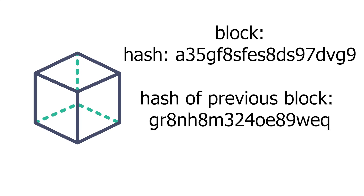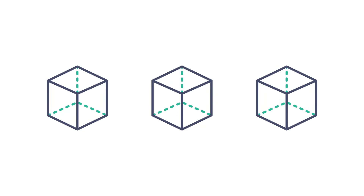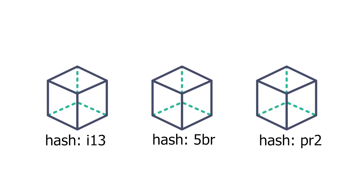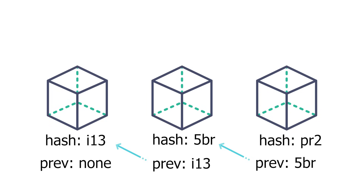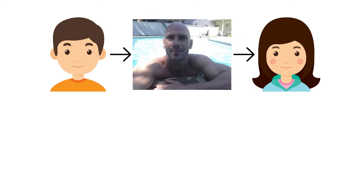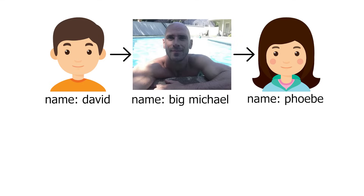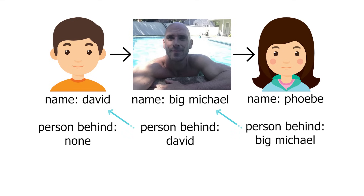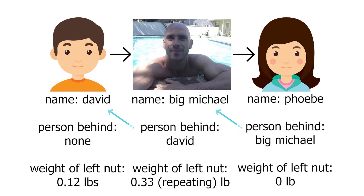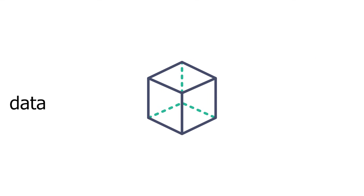A block also contains the hash of the previous block on the chain, as well as other information like transaction data. Because all the blocks contain their own hash and the hash of the previous block, they're connected in a chain. You can think of this like people standing in a line — each person has their own name, and each person knows the name of the person standing behind them in line, as well as other information. Because each person knows the name of the person before them and has their own name, we could gather all these people and form the same line every time.